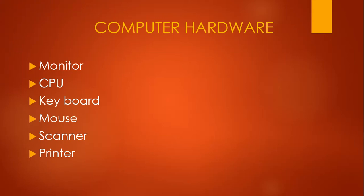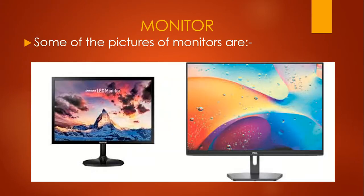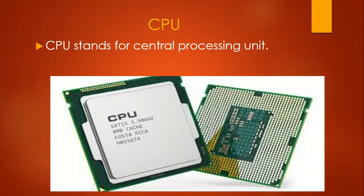Let's start with them one by one. Monitor — it's like a TV screen on which we can see different programs and cartoons. Monitor shows us what the computer is doing. The information that we see on the monitor is a soft copy of our data.